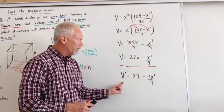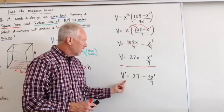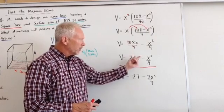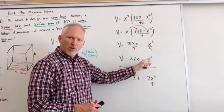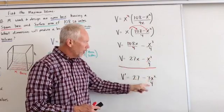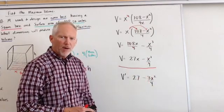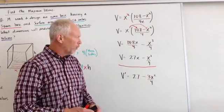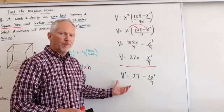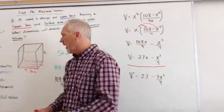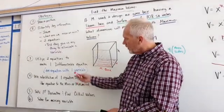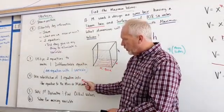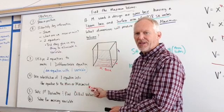So now we take the first derivative. V prime is equal to 27, there's only 1x, 27 minus 3, bring it down, reduce the power squared over 4. So 27 minus 3x squared over 4. Now I have that. What do we do next? Well, let's go back and see what we have to do on our list.